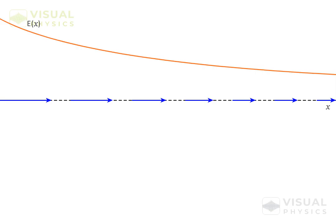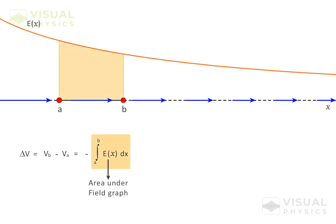If we know the variation of field along a line, the potential difference between two points equals the negative of the line integral of field along that path. This term represents the area under the field graph, so potential difference between two points is the negative of the area under the field graph between those points.